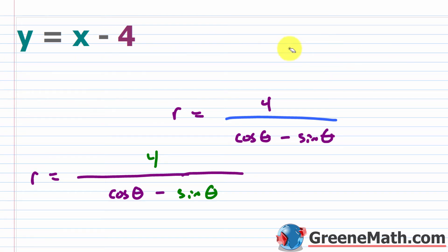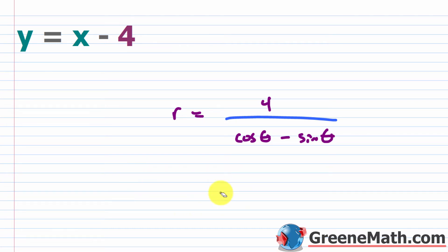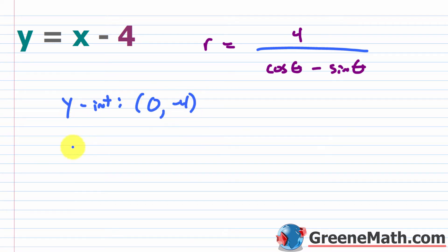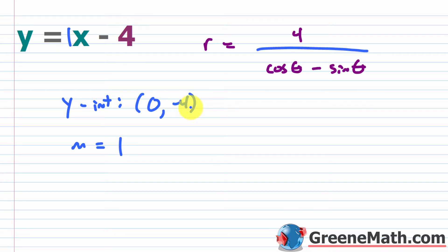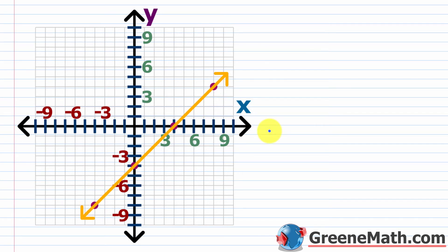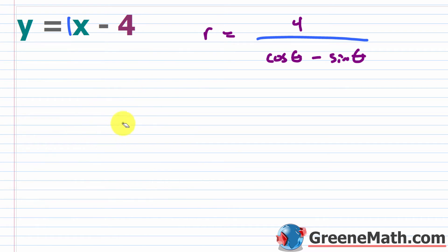Now let's talk about graphing. Graphing a polar equation is one of the more difficult tasks, and lines are a bit more challenging on the polar grid than on the rectangular plane. For y = x − 4 on the rectangular plane, the y-intercept is (0, −4) and the slope m = 1. We can go back to making a table of values, plugging in values for theta and computing r.